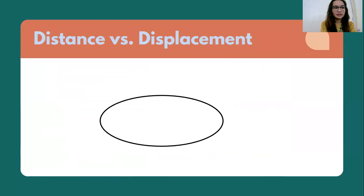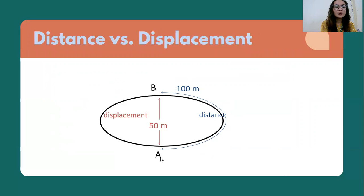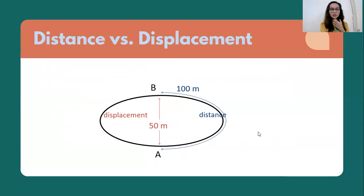Distance versus displacement: to illustrate distance, from point A to point B — if the path is not straight and you have to go around to reach position B, then the total path traveled is your distance. Your displacement, on the other hand, is simply how far you are from A to B — basically the straight-line distance, for example 50 meters. Unlike distance, which is the full path traveled, displacement is simply how far apart A and B are from each other.